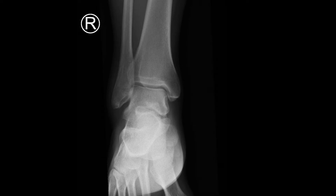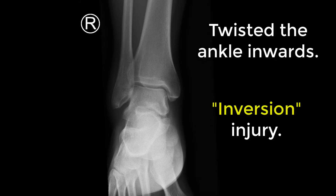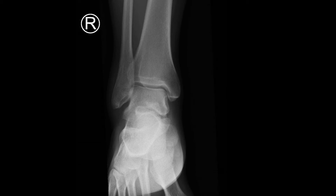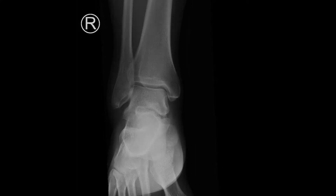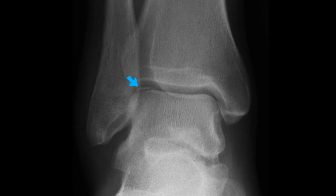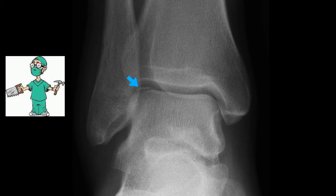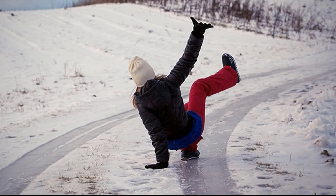X-ray number three is a tough one. Playing football and had ankle pain after a tackle — he thinks he twisted his ankle inwards. This is an AP of the ankle; the lateral appears absolutely normal. Can you see the abnormality? It's pretty subtle but it's important to the patient. If you zoom in you can see the fracture of the talar dome. This injury required orthopedic review and an arthroscopy.